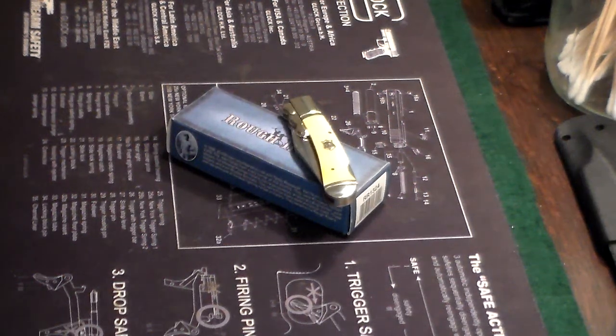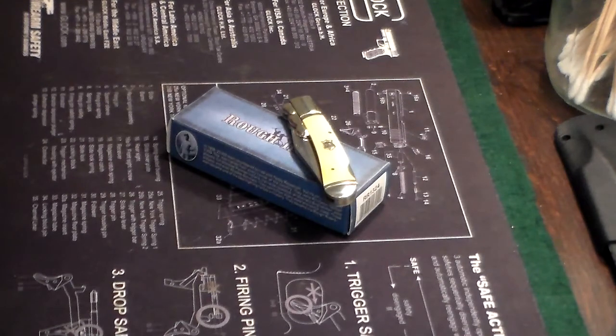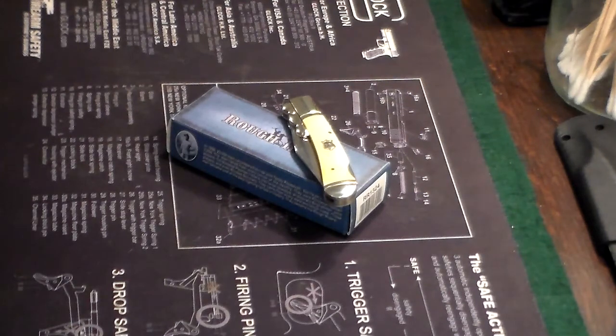This is just a quick video on a new Rough Rider swing guard knife that I got. It's a cheap $10 knife from Amazon.com, and the main reason I got it is because I travel into New York City a lot.